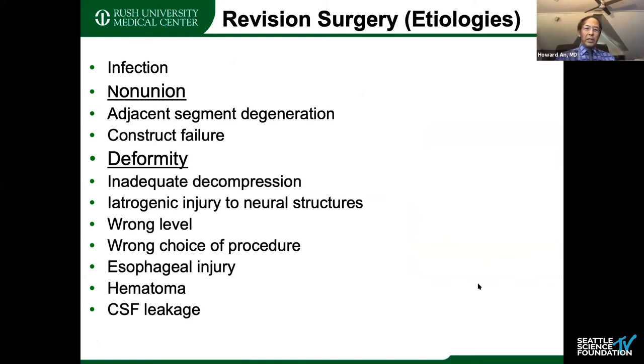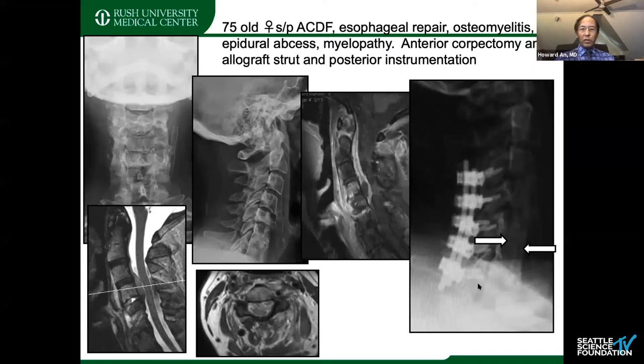There are many etiologies for revision surgery. The non-union deformities we're going to talk about — but this is a case example of an infection case that came elsewhere with osteomyelitis, so you can see epidural abscess. It requires revision anterior surgery, which you do with an ENT surgeon carefully to avoid another esophageal tear. You do a thorough debridement, anterior corpectomy, and posterior instrumentation that I did about five years ago.